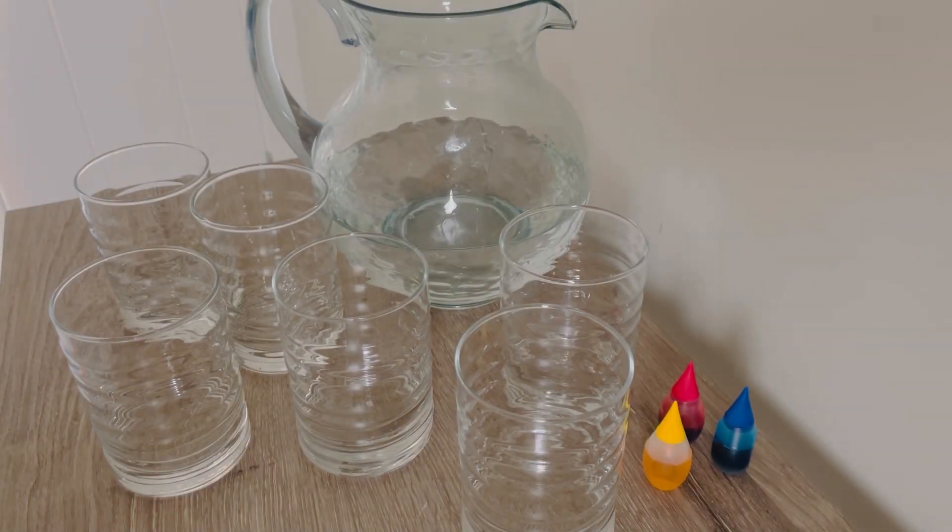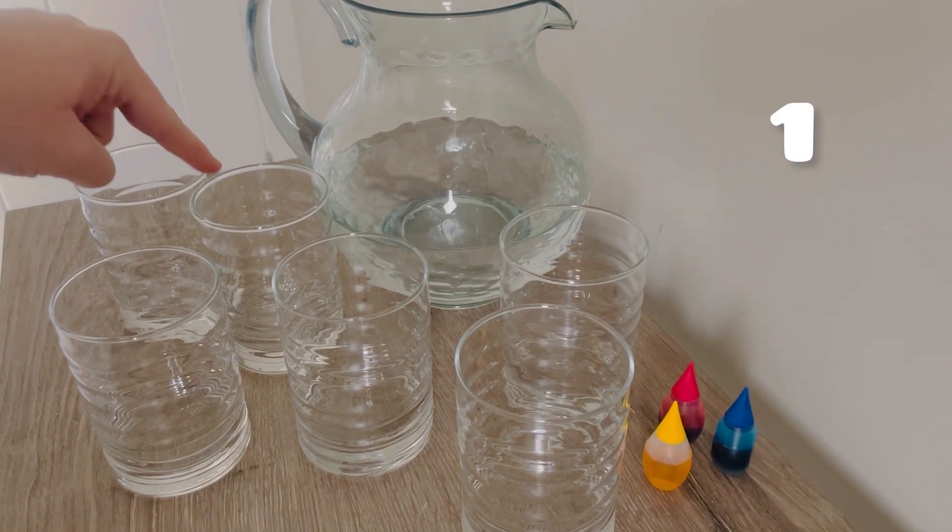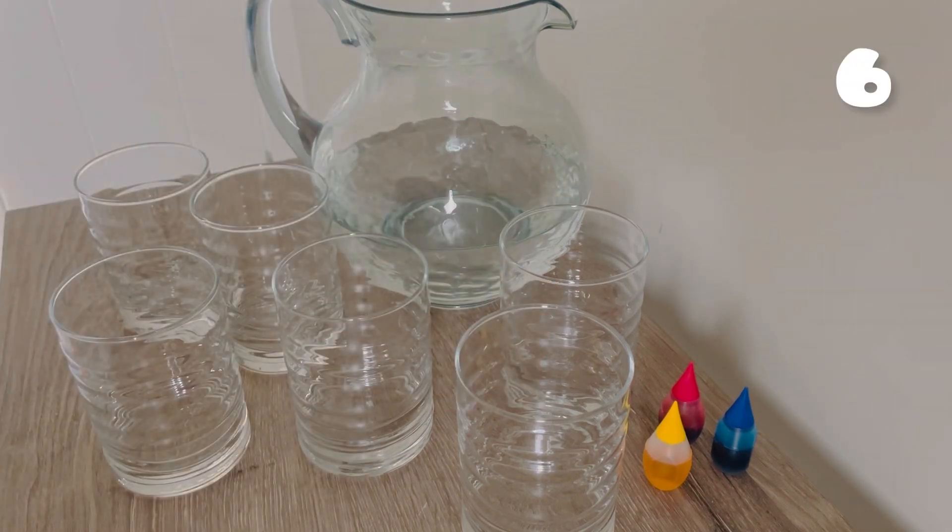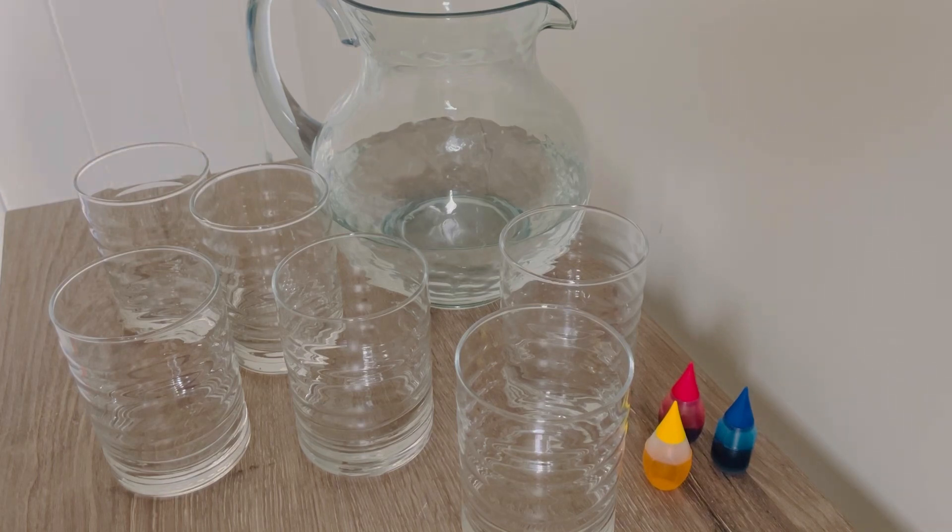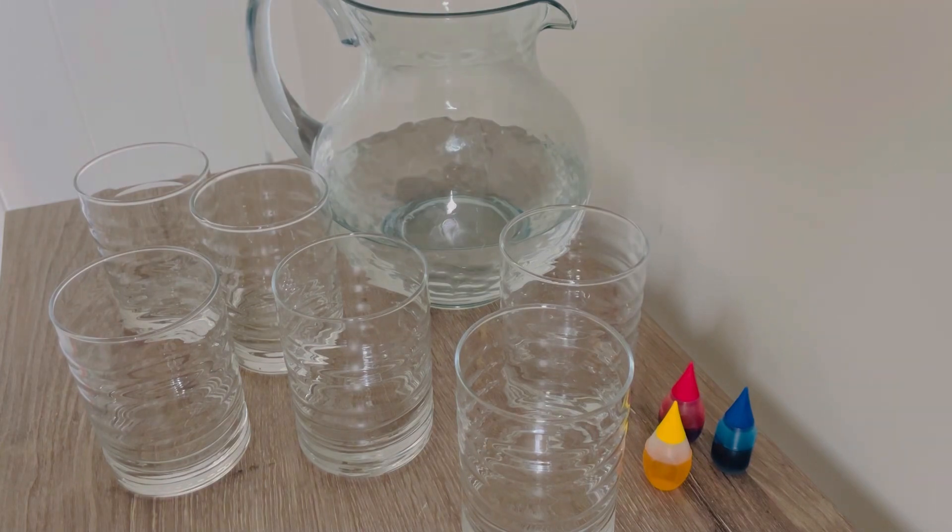Hi friends! Today we're going to try and make a rainbow. So, you're going to need one, two, three, four, five, six glasses, a pitcher of water, and red, yellow, and blue food coloring. I wonder if we can use all of this to make a rainbow.